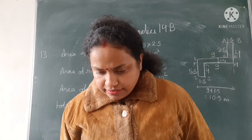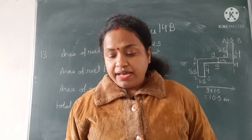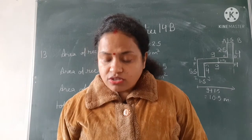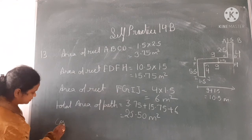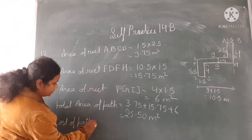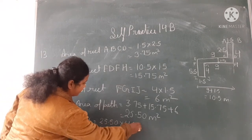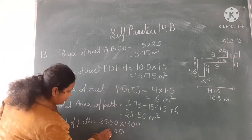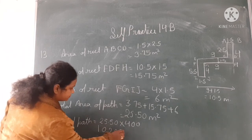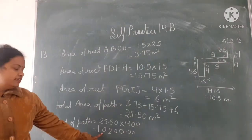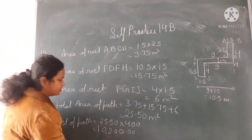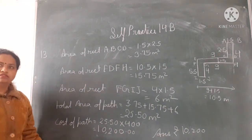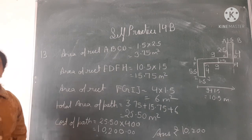A builder charges ₹400 per square metre. Cost of path equals 25.50 into 400. Working it out: you will get ₹10,200. So your answer will be ₹10,200 as the cost of the path.